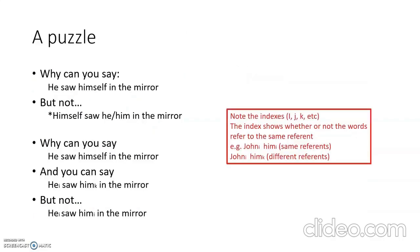A puzzle: why can you say 'he saw himself in the mirror', but not 'himself saw he in the mirror' or 'himself saw him in the mirror'? Why can you say 'he saw him in the mirror' where him refers to a different entity, like John saw James, but not 'he saw him in the mirror' where he and him refer to the same entity? The little letters at the bottom of noun phrases are called indexes. The index shows whether or not the words refer to the same referent — words with the same index have the same referent; words with different indexes refer to different entities.